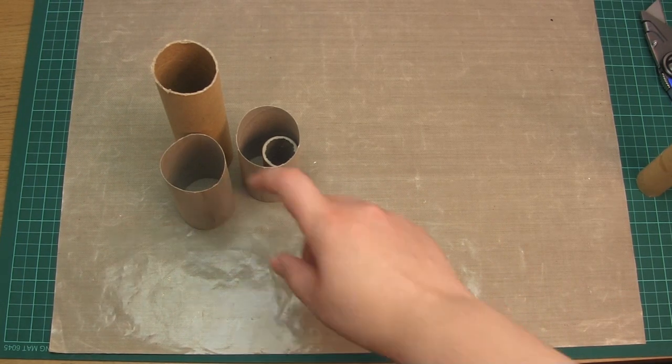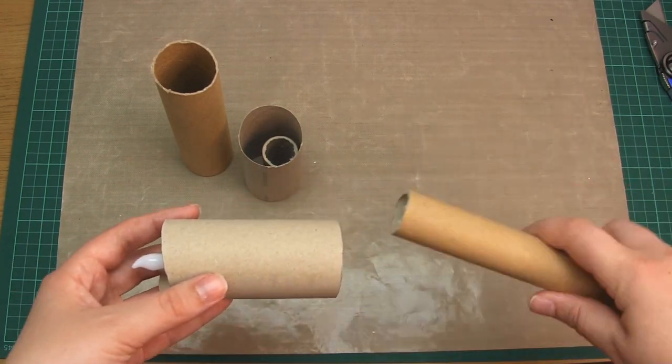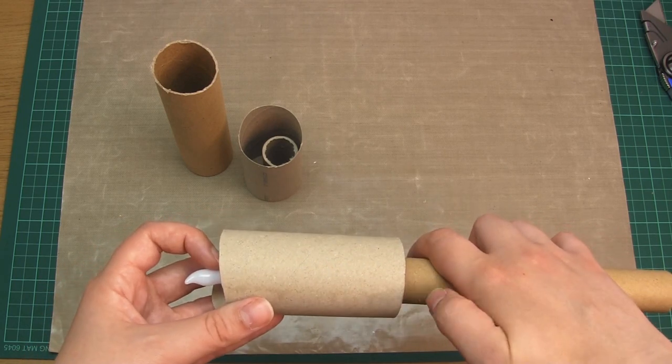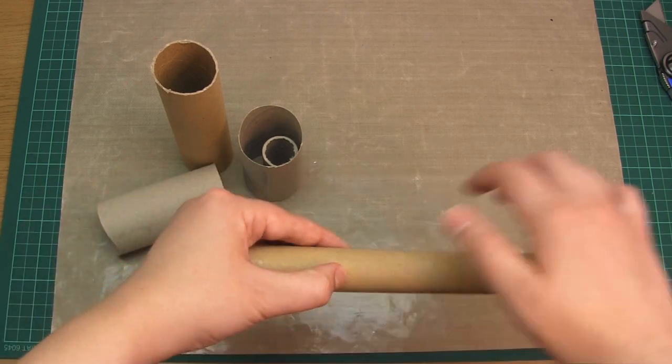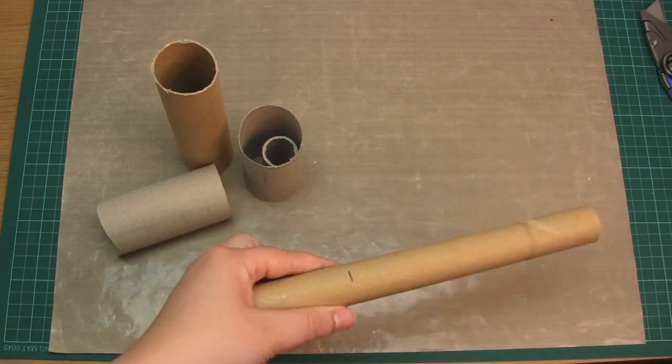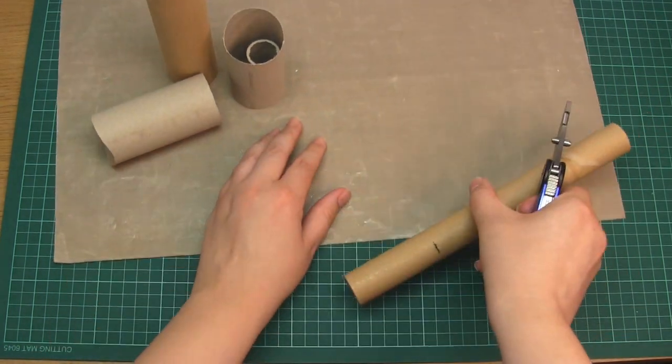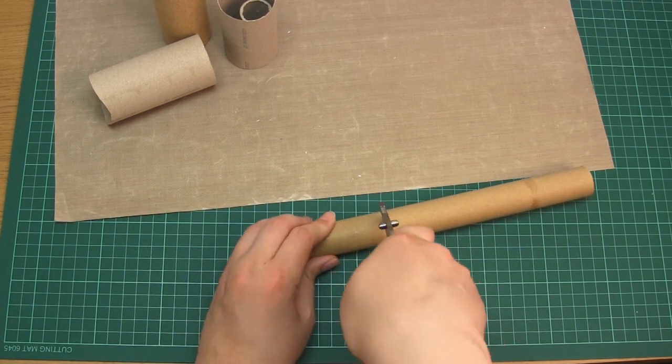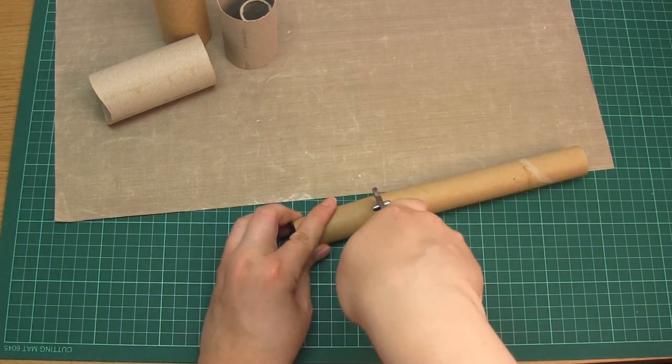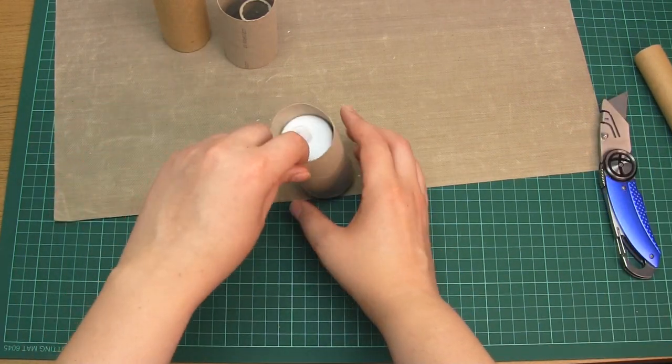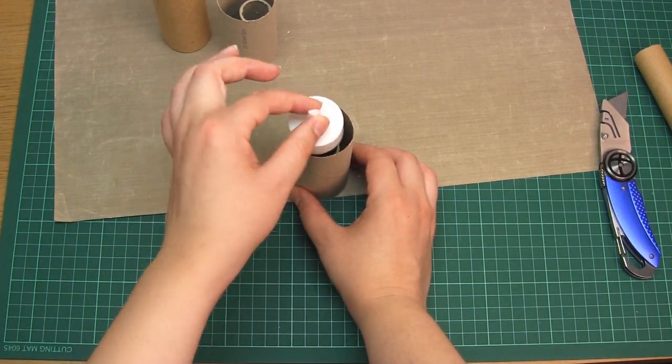Take a narrower tube and cut sections to go inside each candle. These act as platforms to hold the tea lights. Cut the inner tube short enough so the tea light sits just below the top of the outer tube.